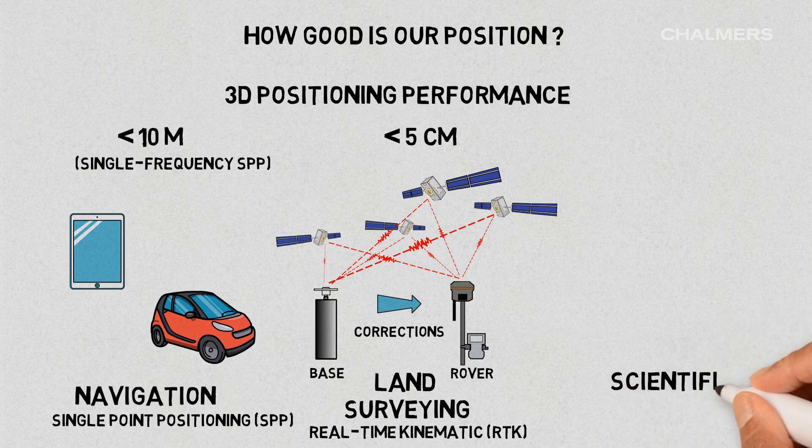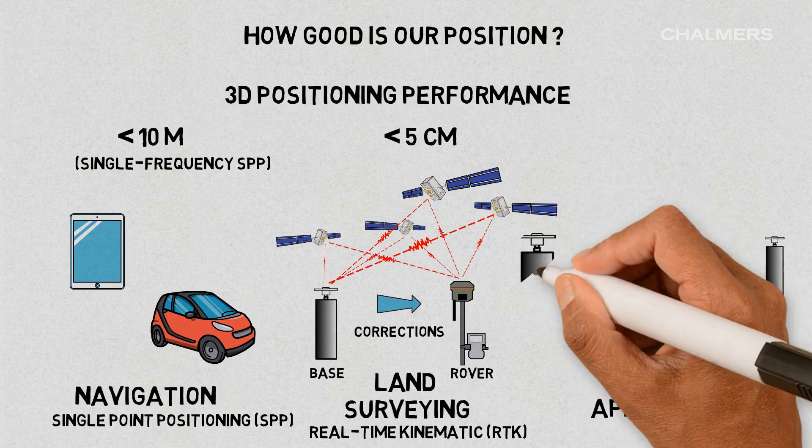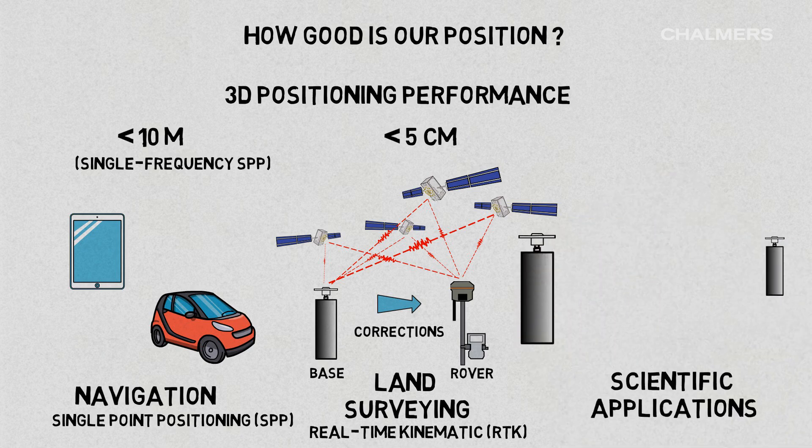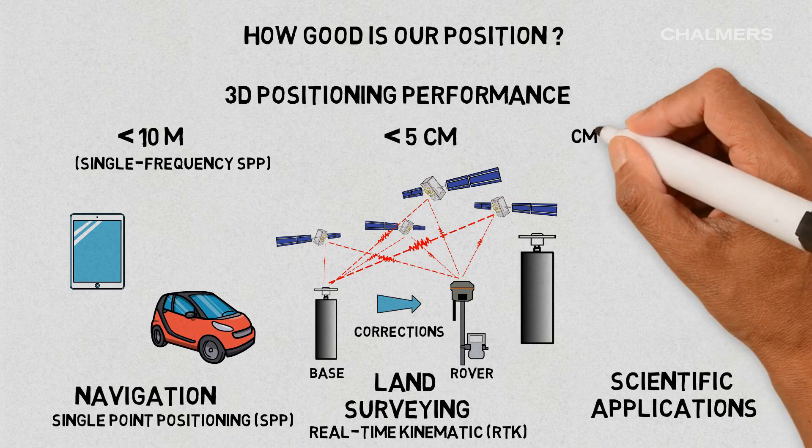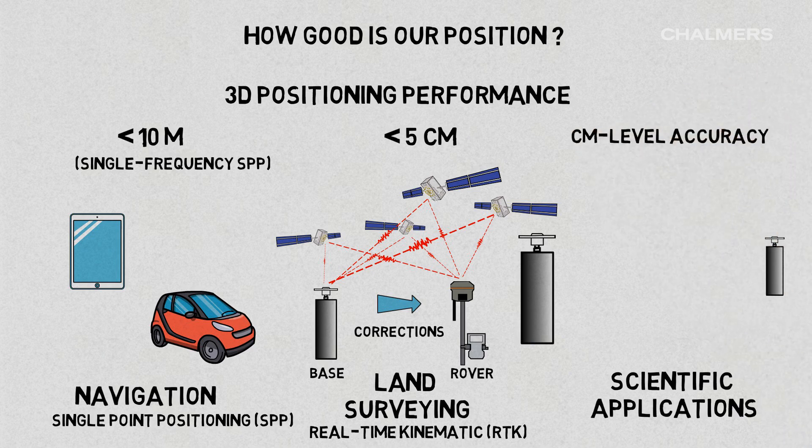GNSS for scientific applications reaches even greater positioning quality. This is achieved with the use of high-performance antennas and receivers, satellite-related data of improved quality or advanced processing schemes, often including receivers forming large networks.